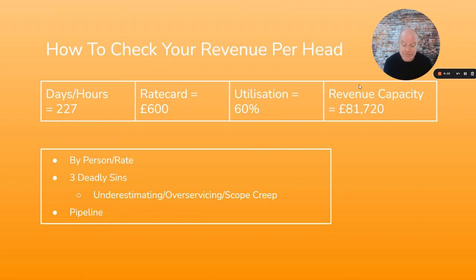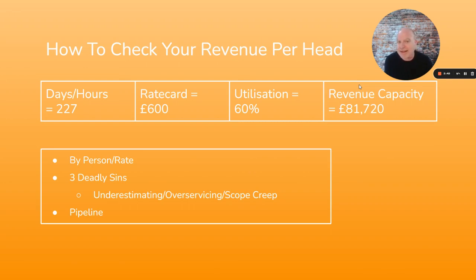It needs to be done by person because people will be on different rates and may be working different days. Although the days affect the revenue per head target, it really just means they'll be bringing in less revenue, but at the same rate. The key issue goes back to the three deadly sins.